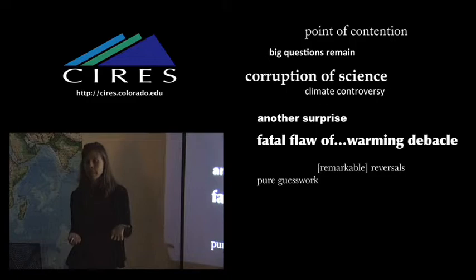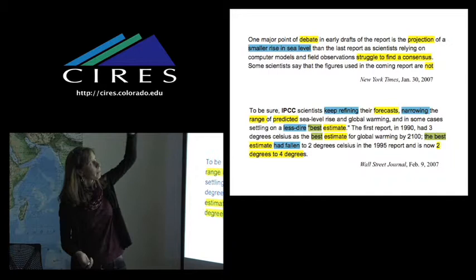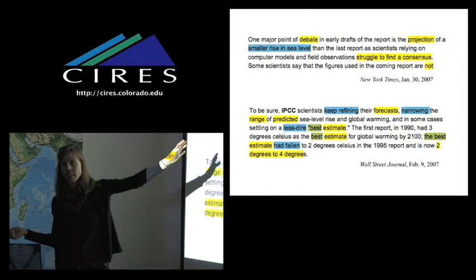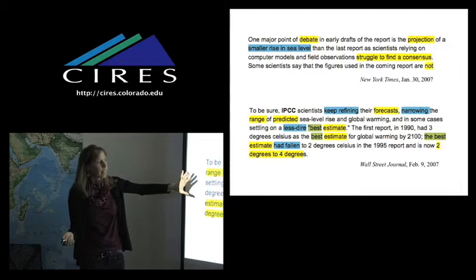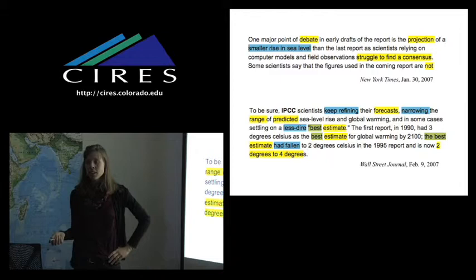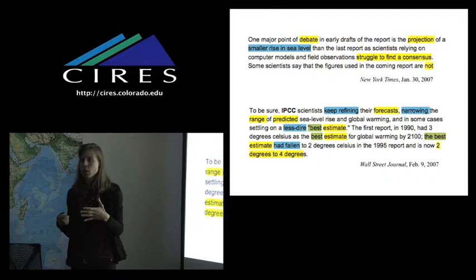And here are some examples of that. This is from the New York Times. This one's great because it points it all out. It starts out, one major point of debate in early drafts of the report is the projection of a smaller rise in sea level, but who knows why. They've been relying on computer models and observations and struggling to find a consensus basically over what to say about them. The Wall Street Journal, I think, does a better job in this particular example of giving some context for certain changes. For example, they use the idea that IPCC scientists keep refining, which is a less, the tone is much less strong than struggle to find consensus. They're narrowing a range of predicted sea level rise instead of saying, oh, it's a smaller rise without any context.